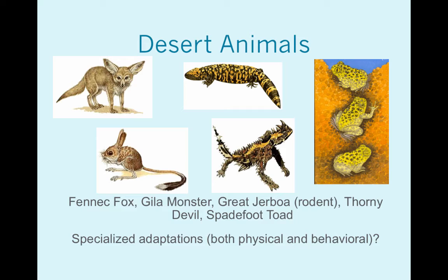The Gila monster has a really fat tail, and they use it the same way a camel uses their humps — that fat has a high water content so they store extra moisture in that tail. The toad on the far right is doing something called estivation. It burrows into the ground and essentially goes into a suspended animation until it rains, at which point they come out, mate, their eggs develop very quickly, and then they burrow back into the soil waiting for another wet period to reproduce. So be able to recognize adaptations that are both physical and behavioral.